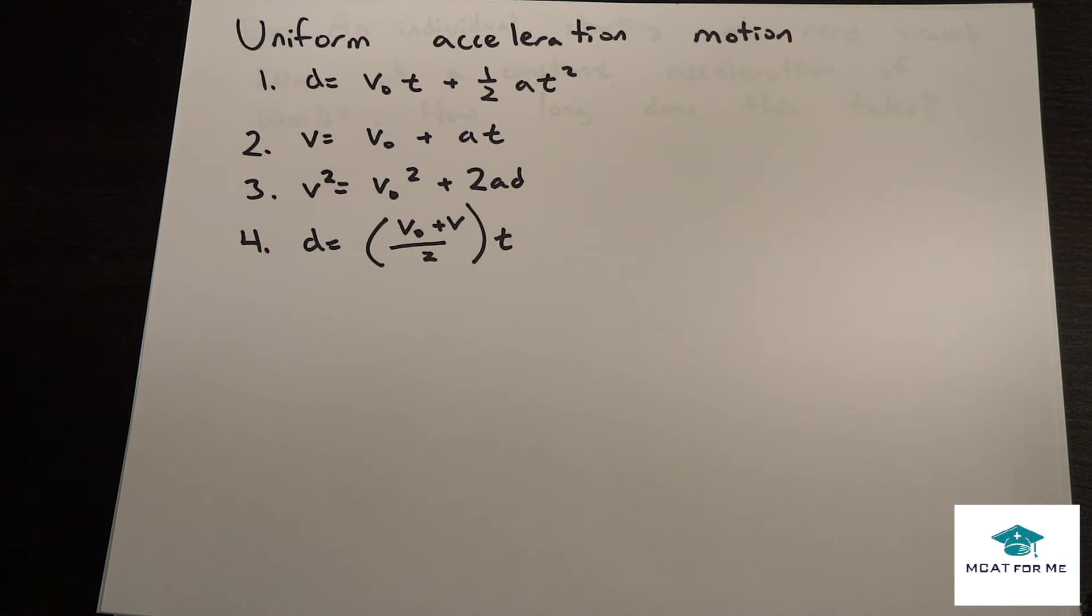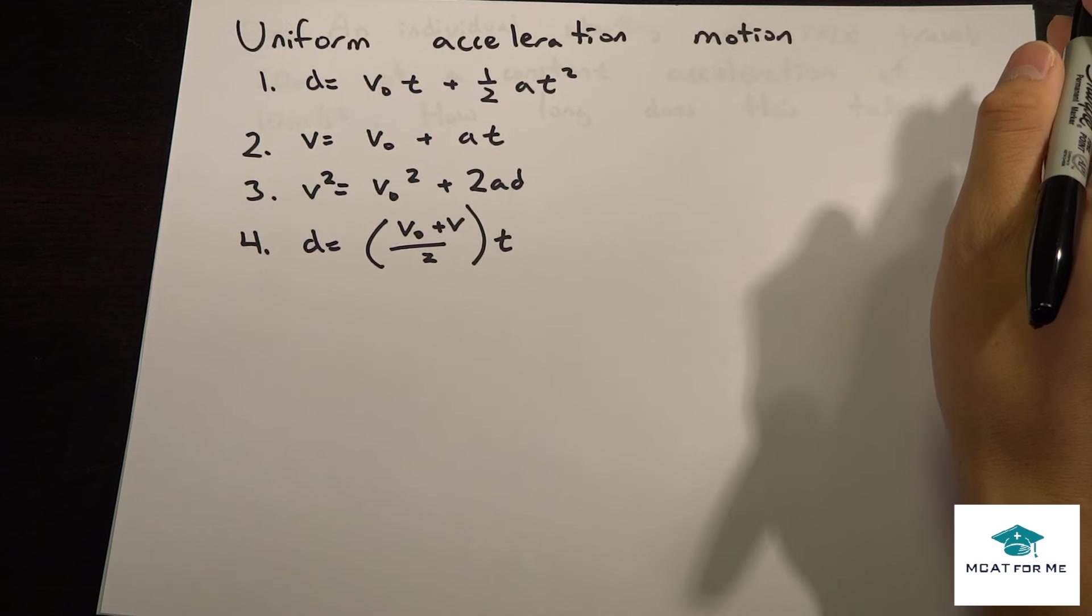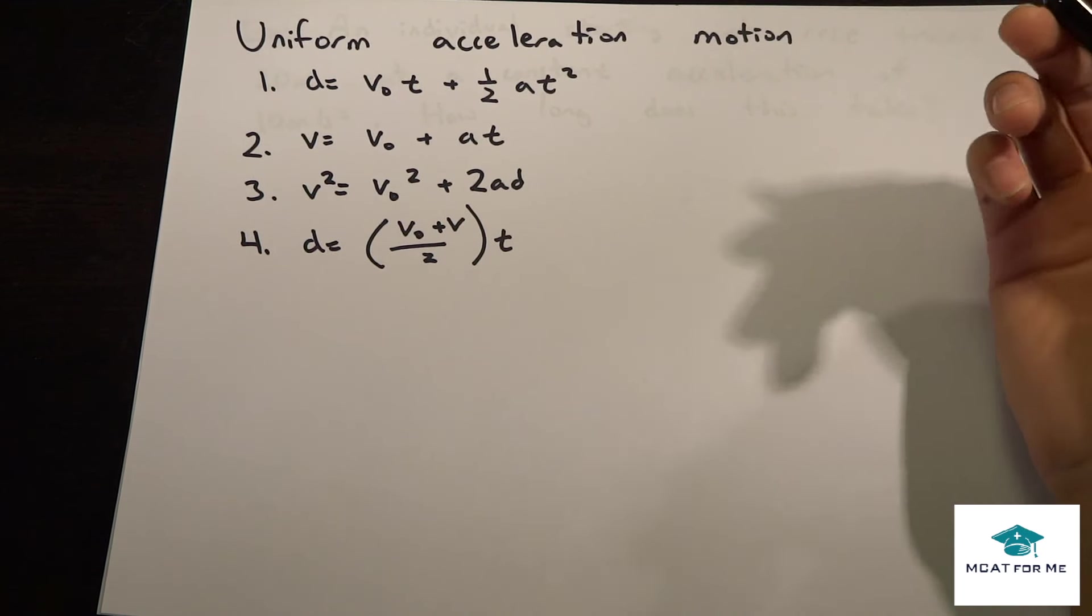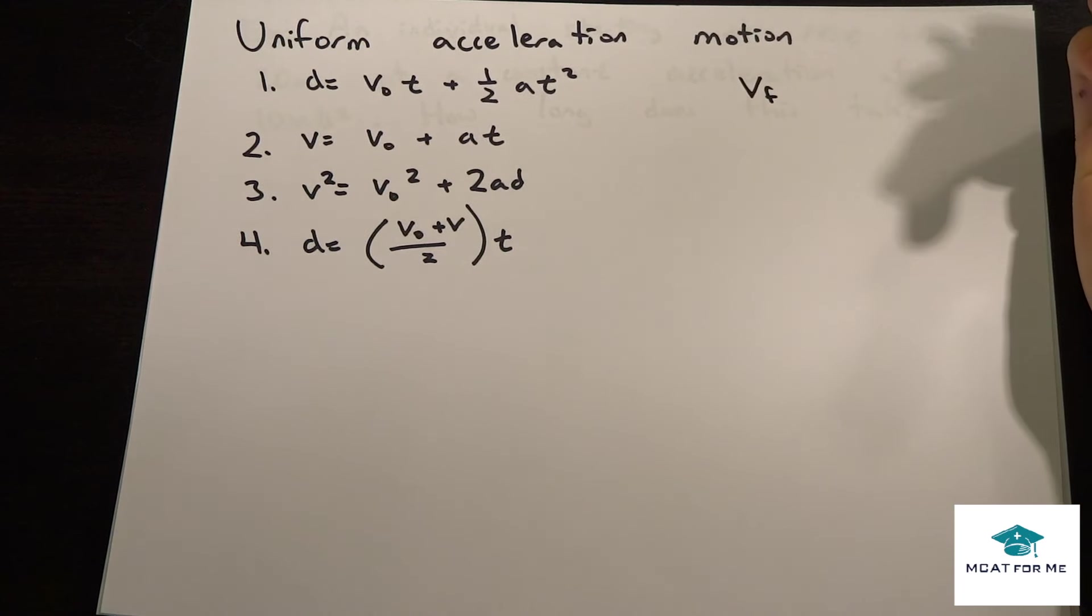And so the important part is knowing what is not given in each of these equations. So for example, this one, what isn't given? Well, we know that the final velocity, v final, is not given.